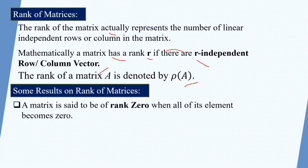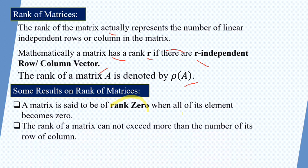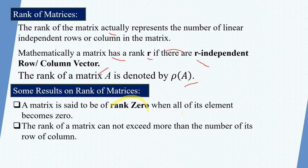A matrix is said to be of rank zero when all of its elements are zero — that is, if all elements of the matrix are zero, the rank is zero. The rank of a null matrix is always zero. The rank of a matrix cannot exceed the minimum of its number of rows or columns. For example, if a matrix is of order 3 by 4, the rank cannot be greater than 3.